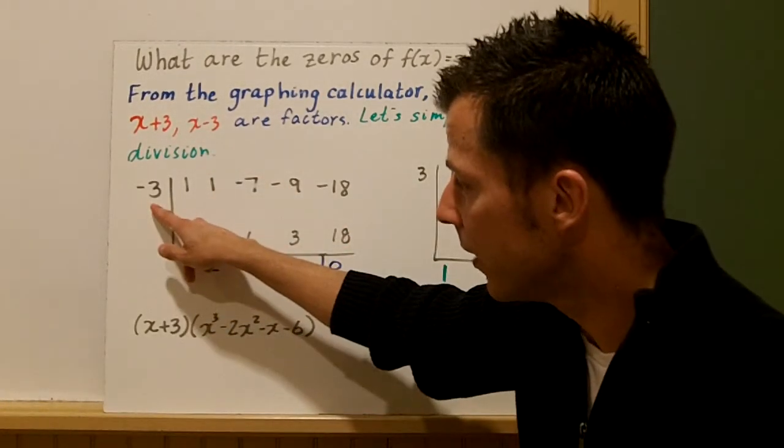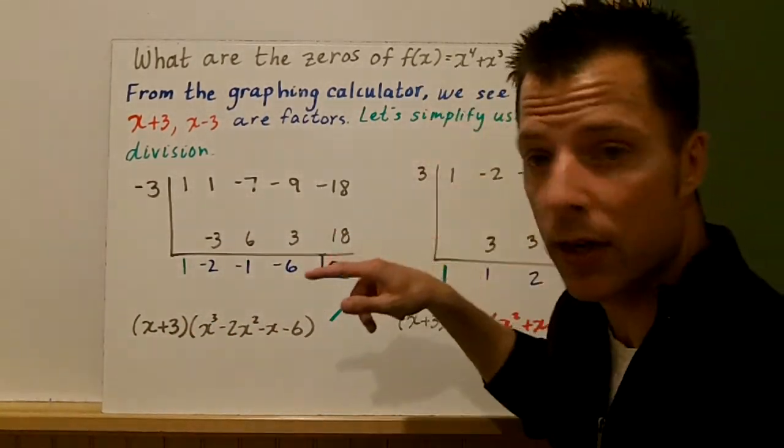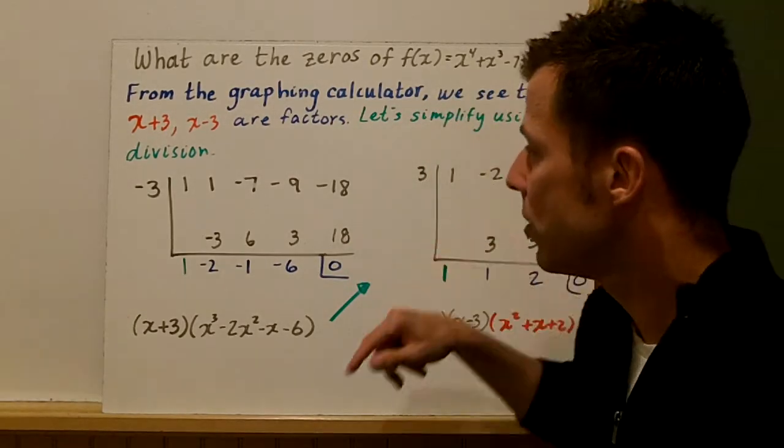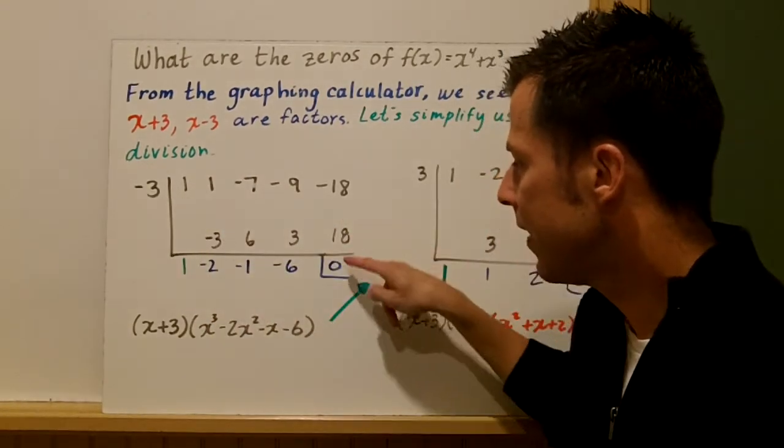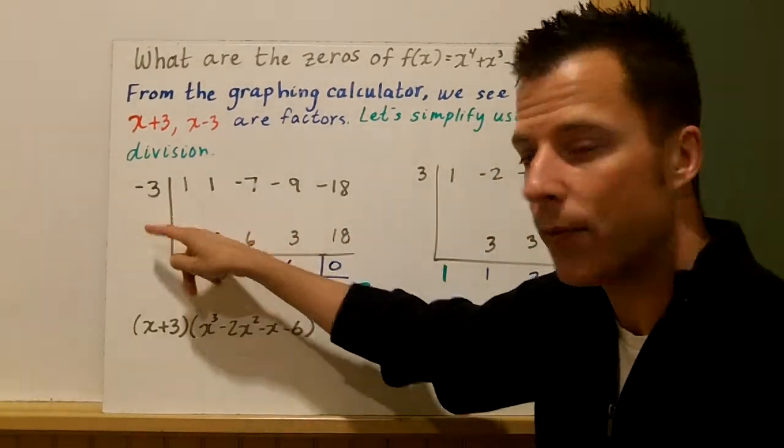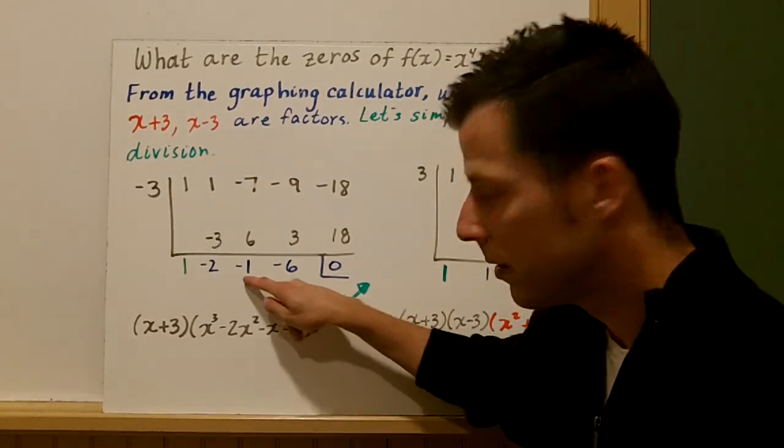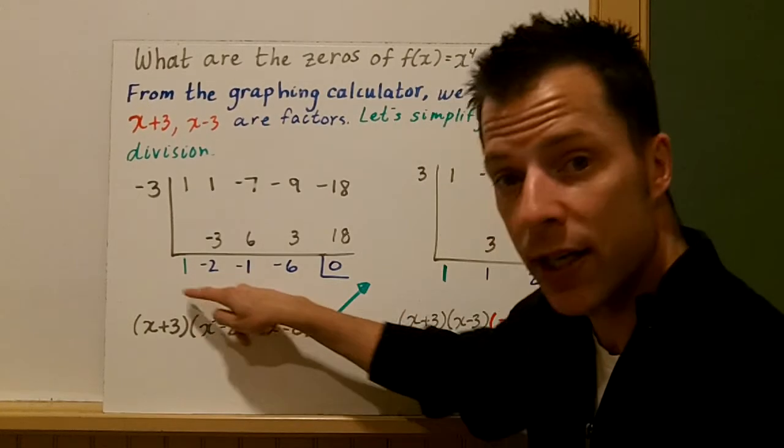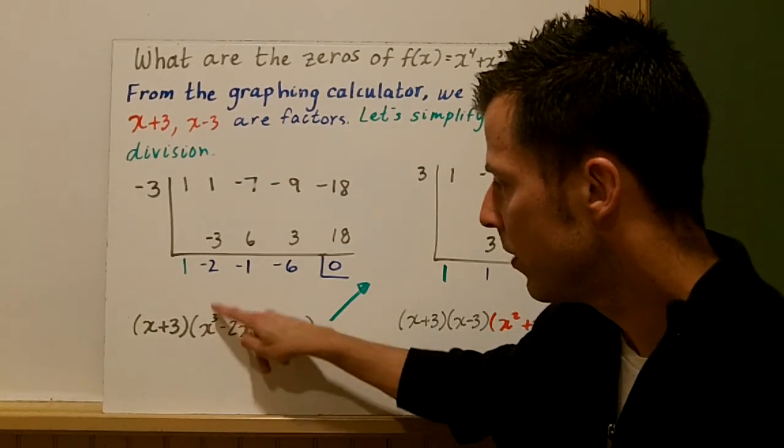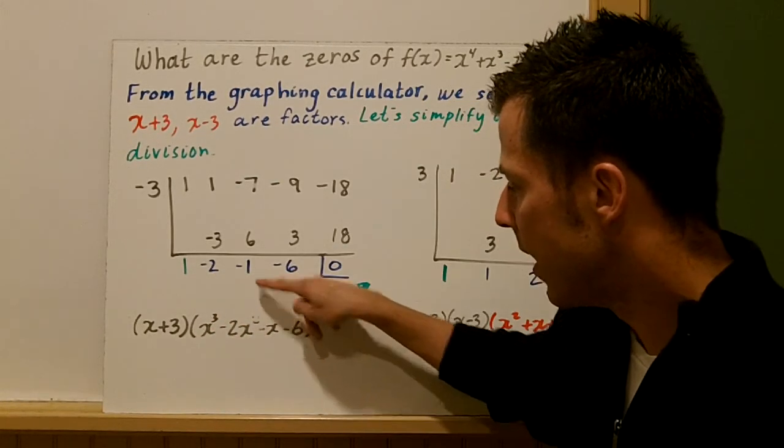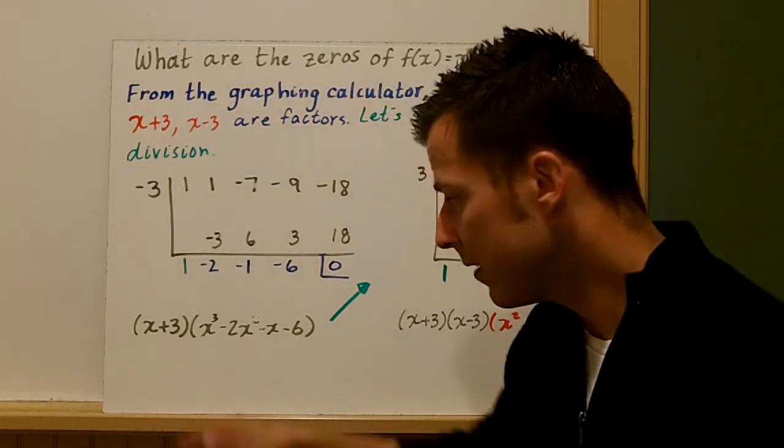So let's simplify using division. What I did is I looked at my graph and I said, okay, where does this function cross the x-axis? These are my factors. That means -3 is a zero and 3 is a zero. So I start with -3 and I synthetically divide. Because the whole goal is what are the zeros? I'm going to solve this quartic equation. Leading coefficients. Drop down the 1 and we synthetically divide and we see that -3 is a zero. So that's our remainder, constant, linear, quadratic, cubic. So I have (x + 3), here's my quotient, 1x^3 - 2x^2 - x - 6.